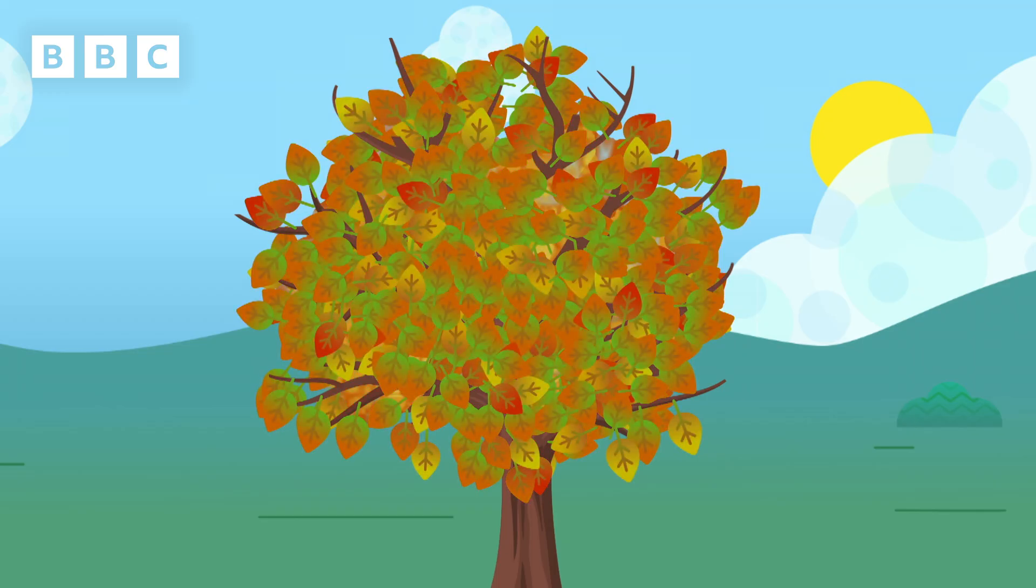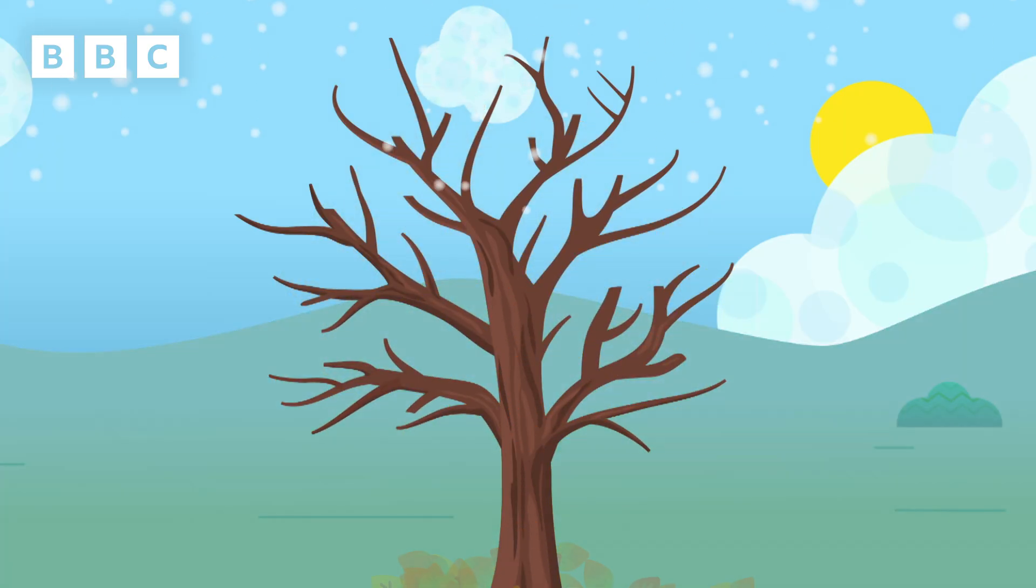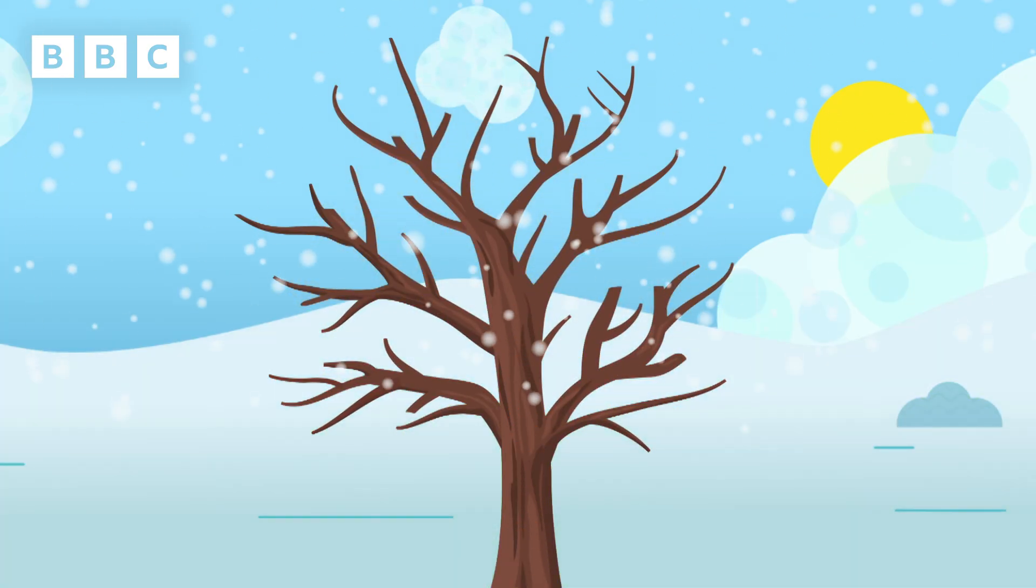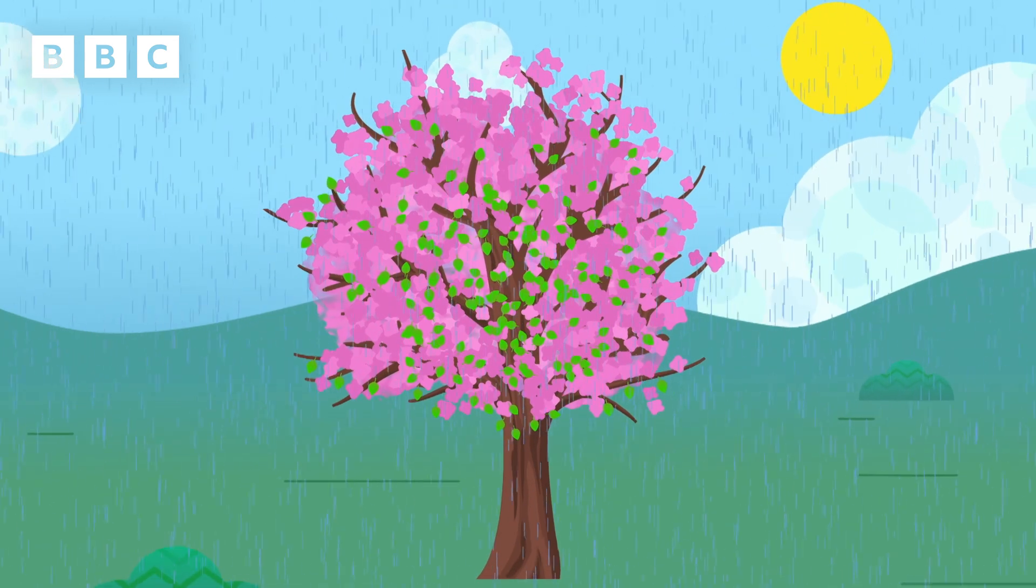In Autumn, the leaves change from green to oranges, reds and browns and fall to the ground, leaving the tree bare of leaves for Winter, until the Spring arrives again.